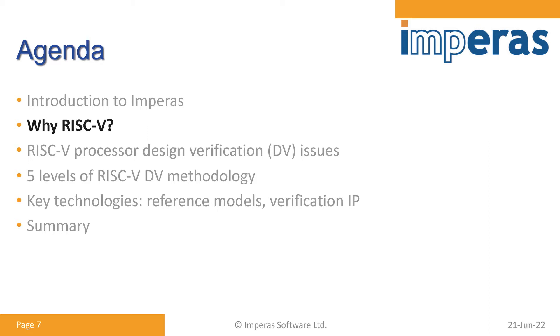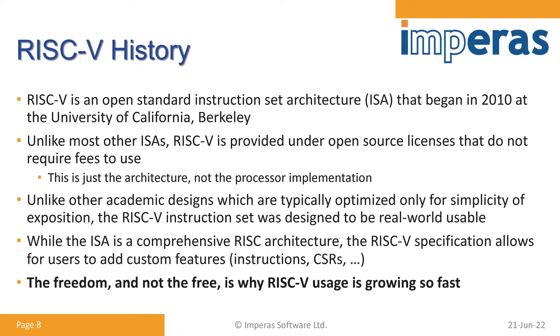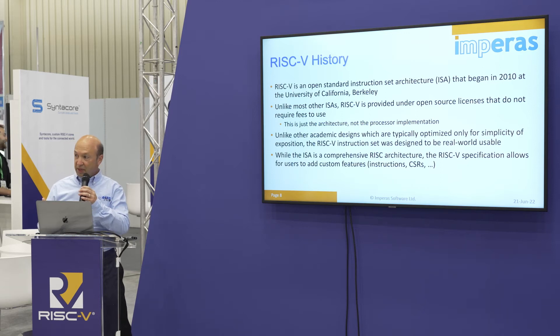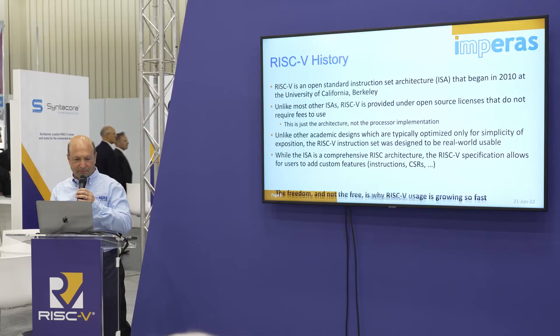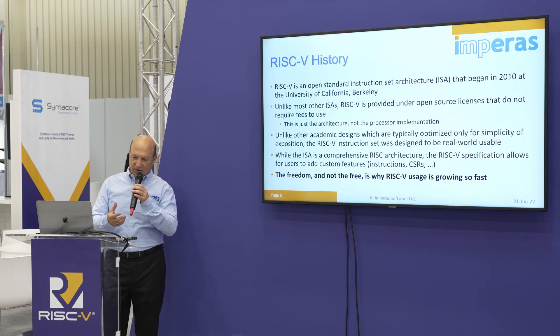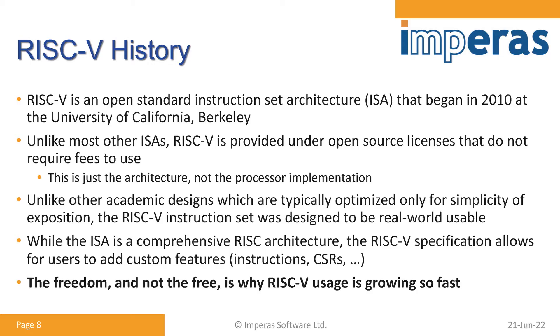So why RISC-V? RISC-V started at the University of California, Berkeley, 12 years ago, and is provided as an open source license. But this is just the architecture—not the implementation. The other thing about RISC-V is that it is not an academic architecture; it was built to actually be used. While it's a comprehensive ISA, the specification allows for custom features, which provides the freedom for people to create domain-specific processors. That freedom to design something in is really the key thing about RISC-V.